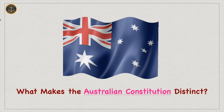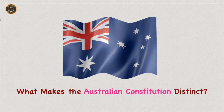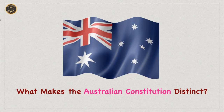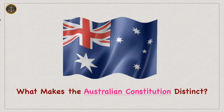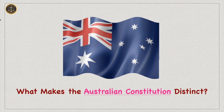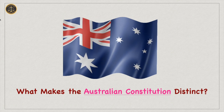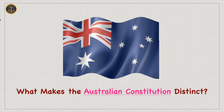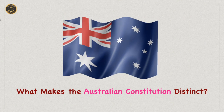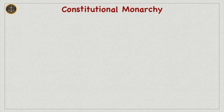If you want to know more about the making of the Australian Constitution, please watch my video on the Evolutionary History of the Australian Constitution. Here I will be discussing only the unique and distinct features of the Australian Constitution. The first distinct feature is Constitutional Monarchy.